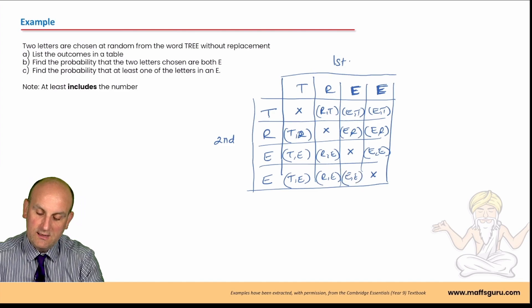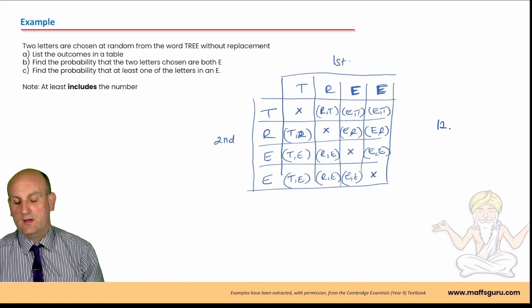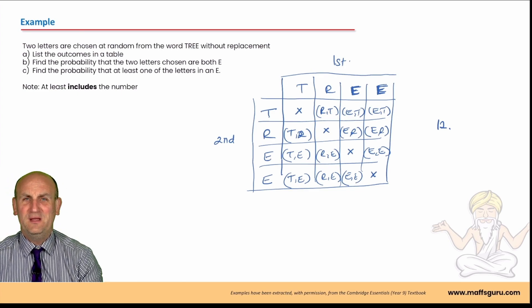So, how many outcomes have we got? One, two, three, four, five, six, seven, eight, nine, 10, 11, 12. Now, I always write the outcomes down beside, just it helps me if I have to work out probabilities. Oh, hold on a moment, I've got to work out some probabilities.